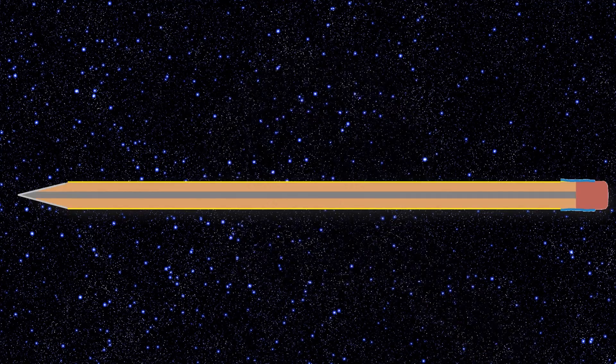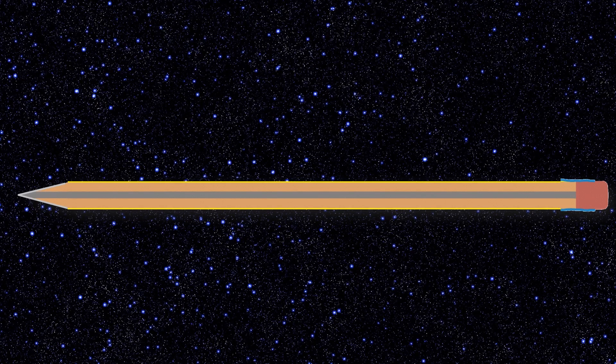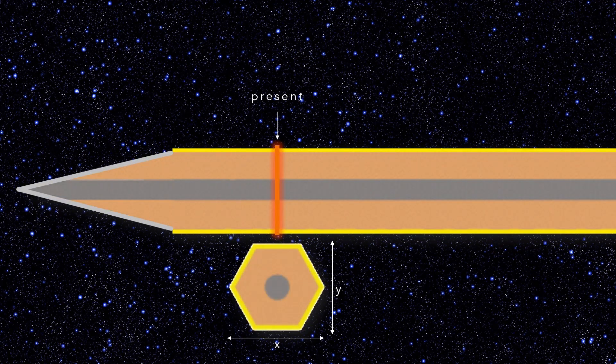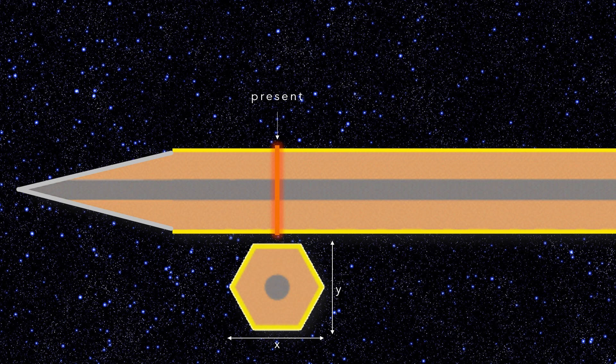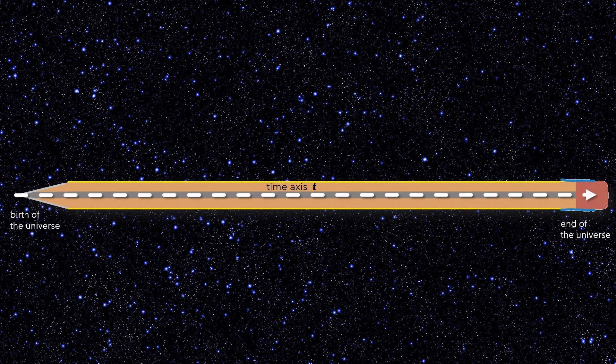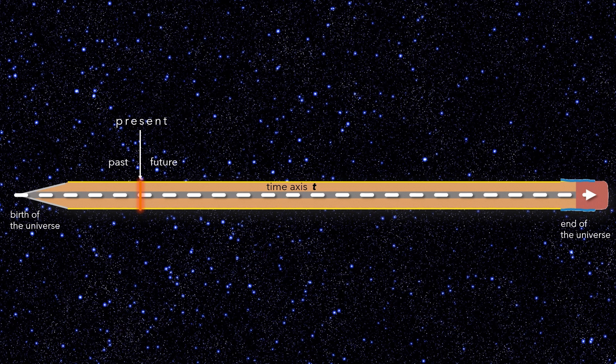Consequently, those beings can only move within this plane in the x and y axis. The third dimension, which for us is of course the length of the pencil or the z-axis, is perceived by the two-dimensional beings as the time value t - their time axis. And thus their present runs along the pencil lead. So the universe at any point in time would be the cross section of the pencil at a specific point. The pencil tip represents the beginning of the universe, and any point within the timeline, let's say right here, would be the present of the two-dimensional inhabitants of this universe.